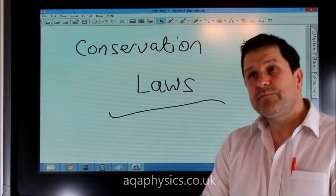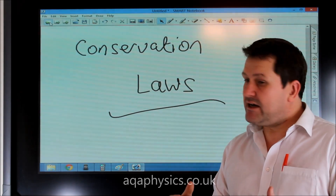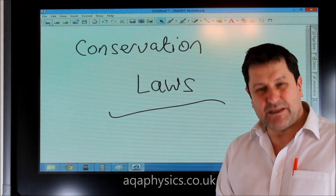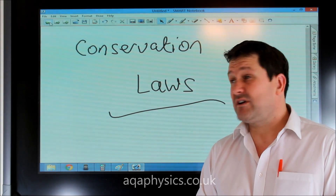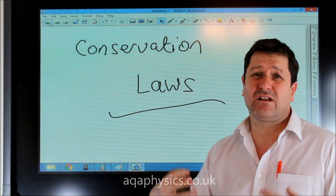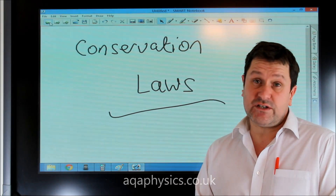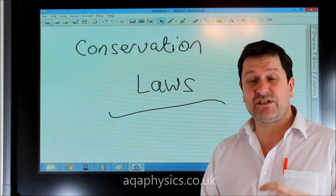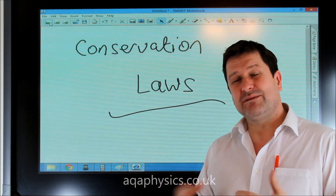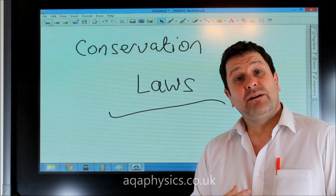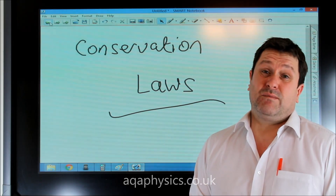In order to look at Feynman diagrams and all of our particle interactions, we need to understand conservation laws. Conservation laws enable us to see if an interaction will occur or not, or sometimes they enable us to identify what the missing particle might be.